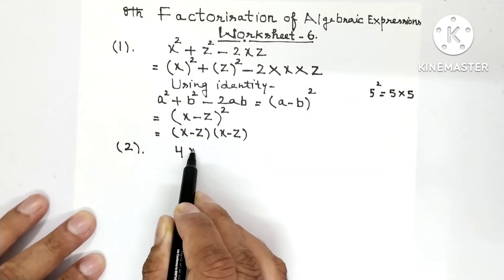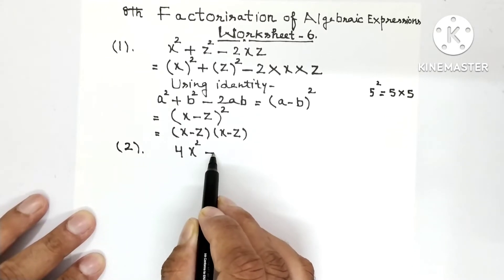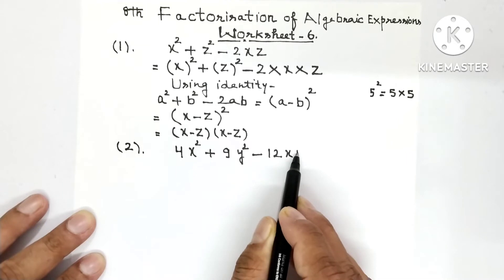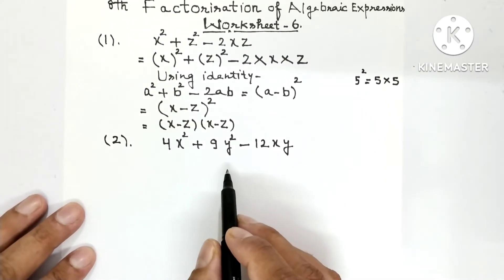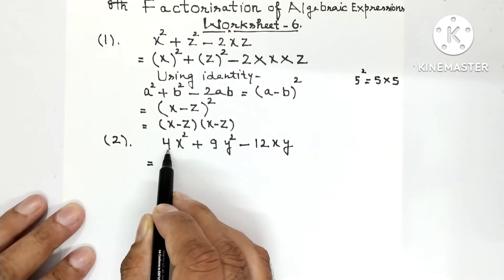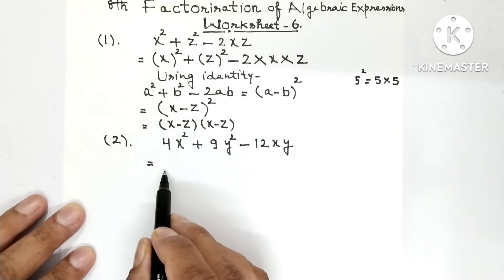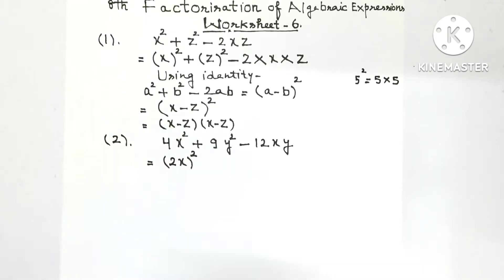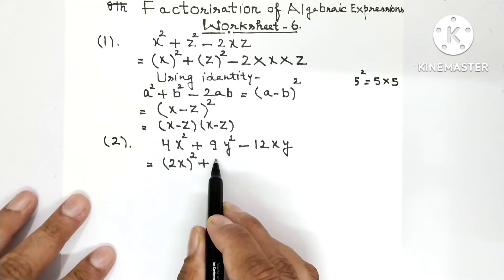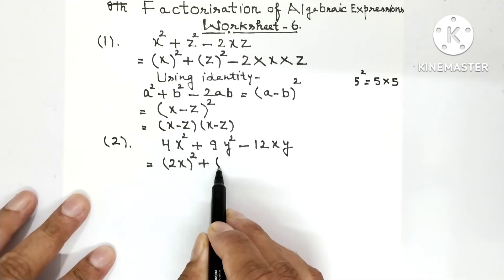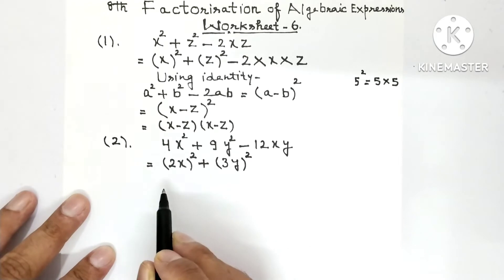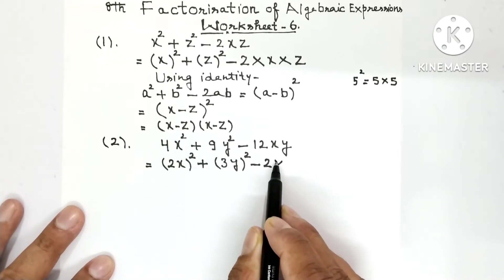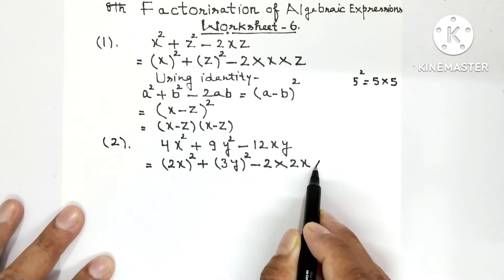Next question: 4x² + 9y² - 12xy. We need to factorize it the same way. 4 is the square of 2 and x² is the square of x, so write it as (2x)² — that is a². Then 9 is the square of 3 and y² is the square of y, so write (3y)² — that is b².